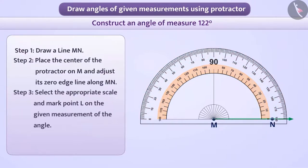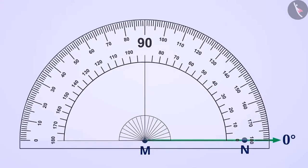In this way, we will consider line MN as 0 degrees. Moving forward on this scale, we will see at which place the section 122 degrees falls. We will mark the point L in front of this place.